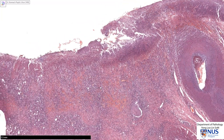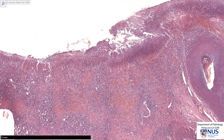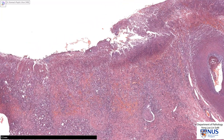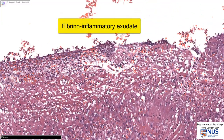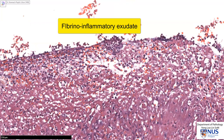Now, let's look at the base of the ulcer. Right on the surface, usually we will see a zone where you can see these pink strands of fibrin — a meshwork of fibrin — and this is mixed with lots of neutrophils. So this is the zone of fibrino-inflammatory exudate.